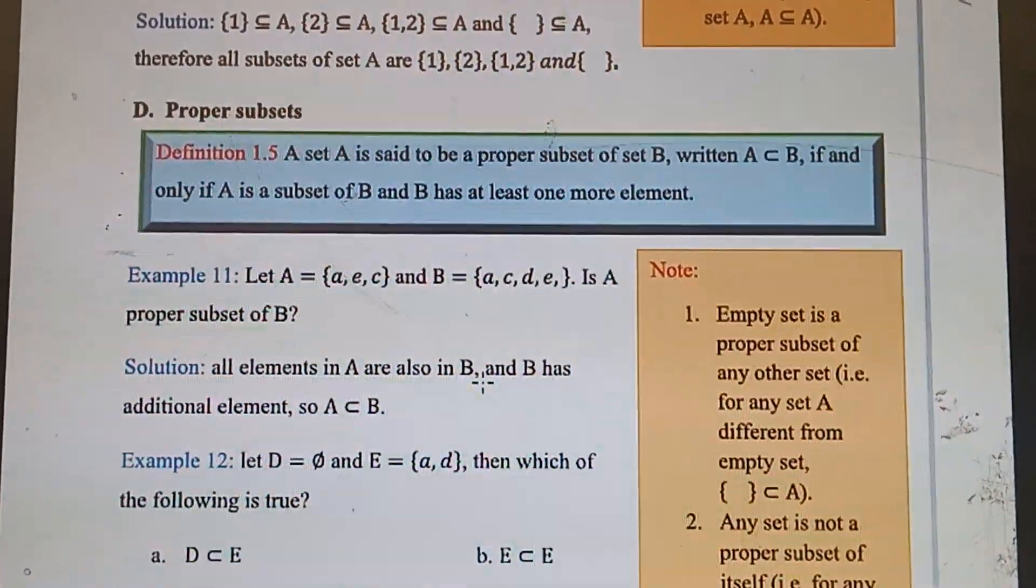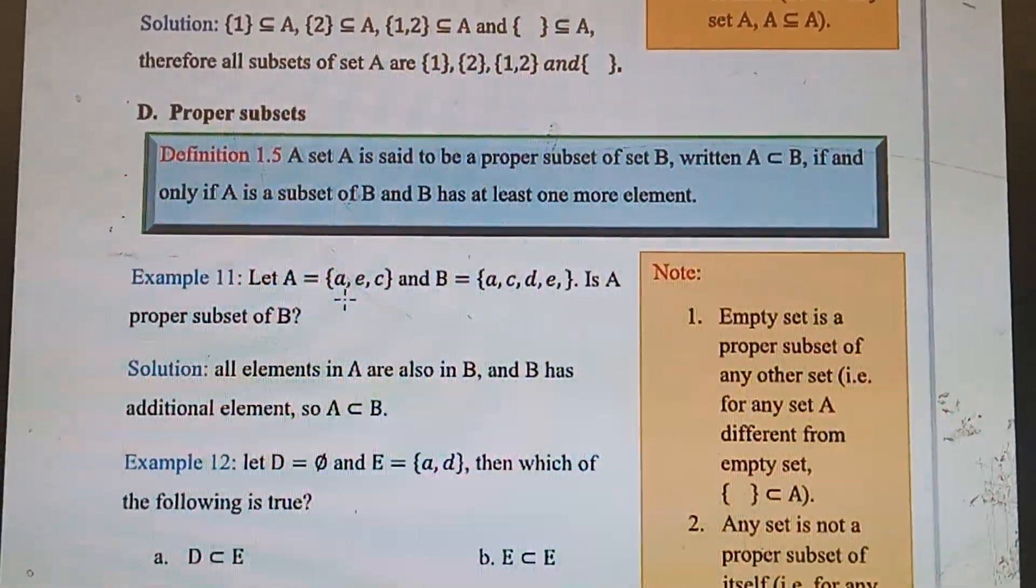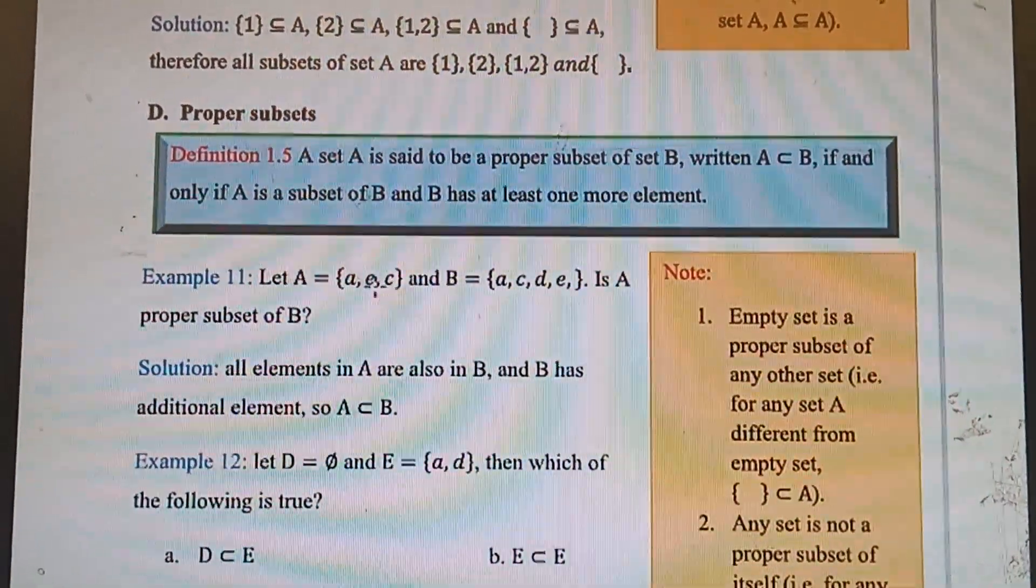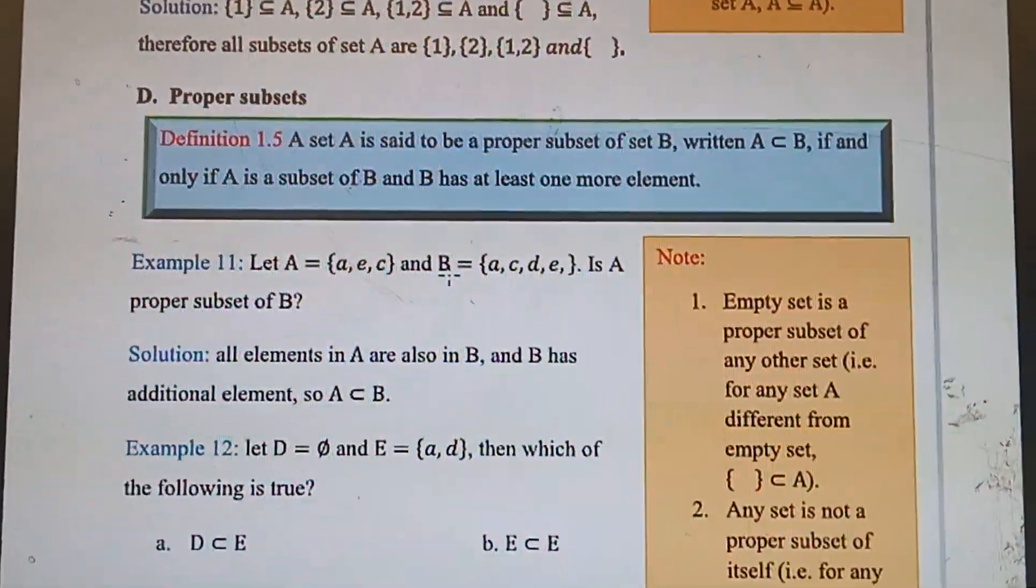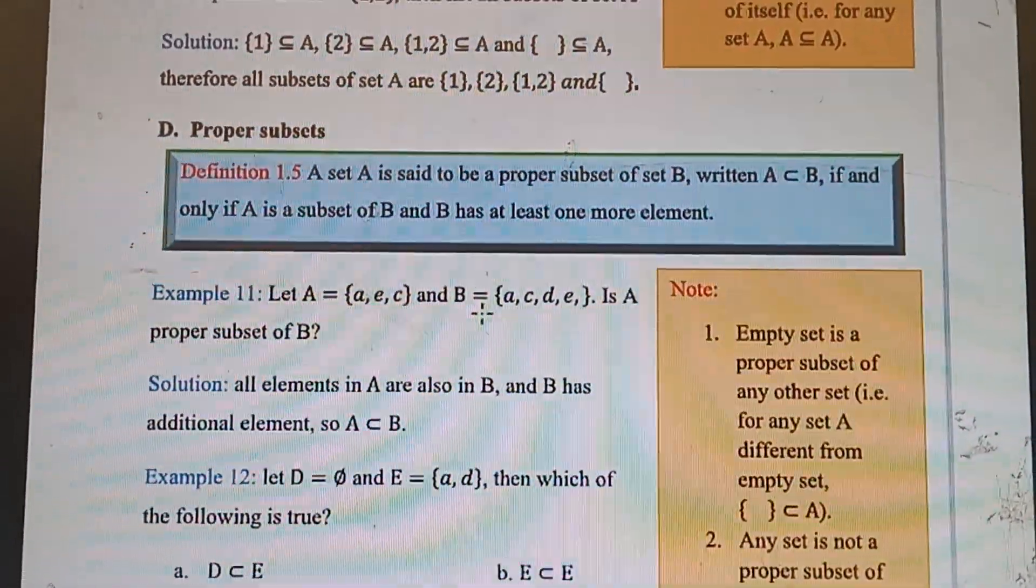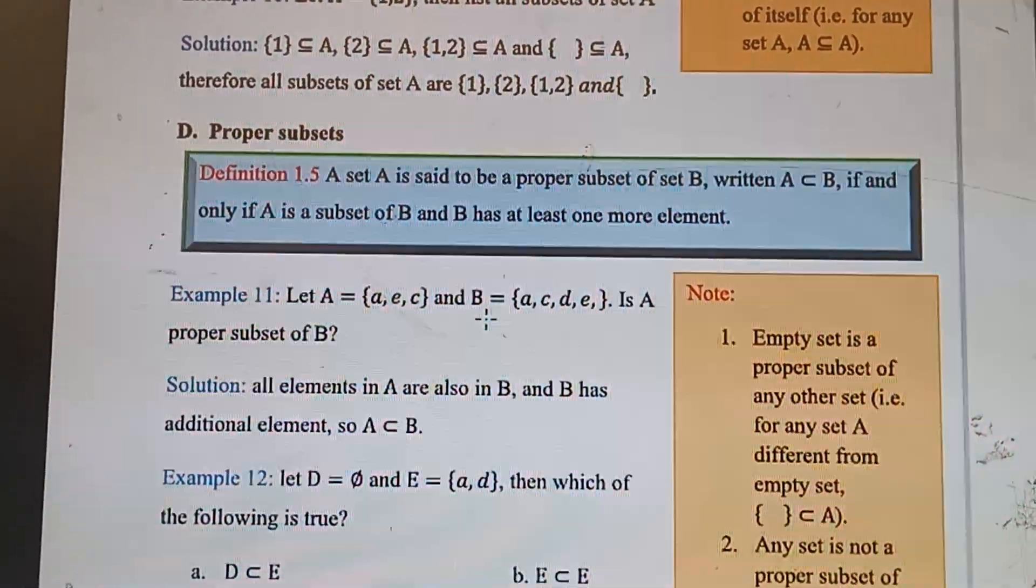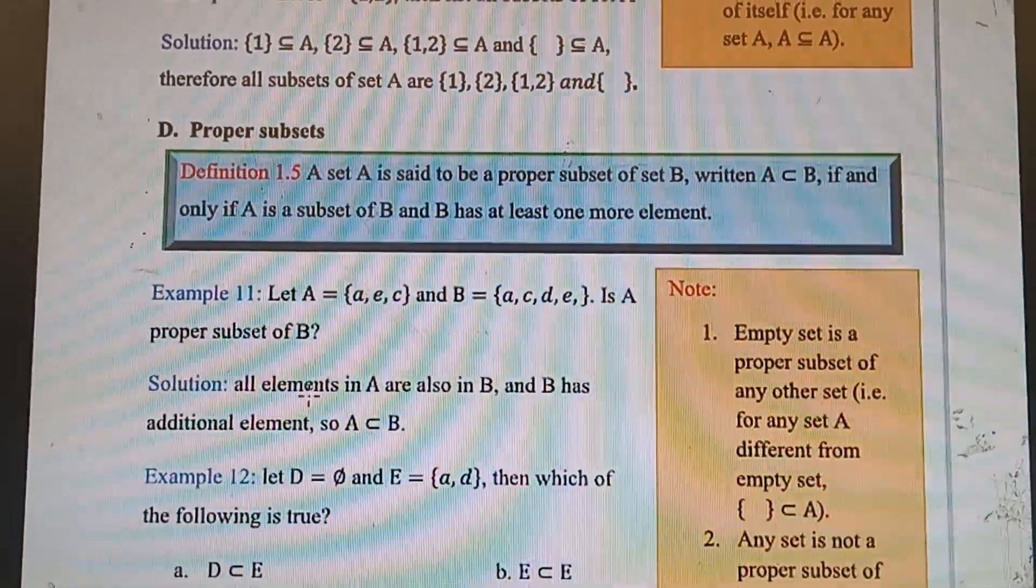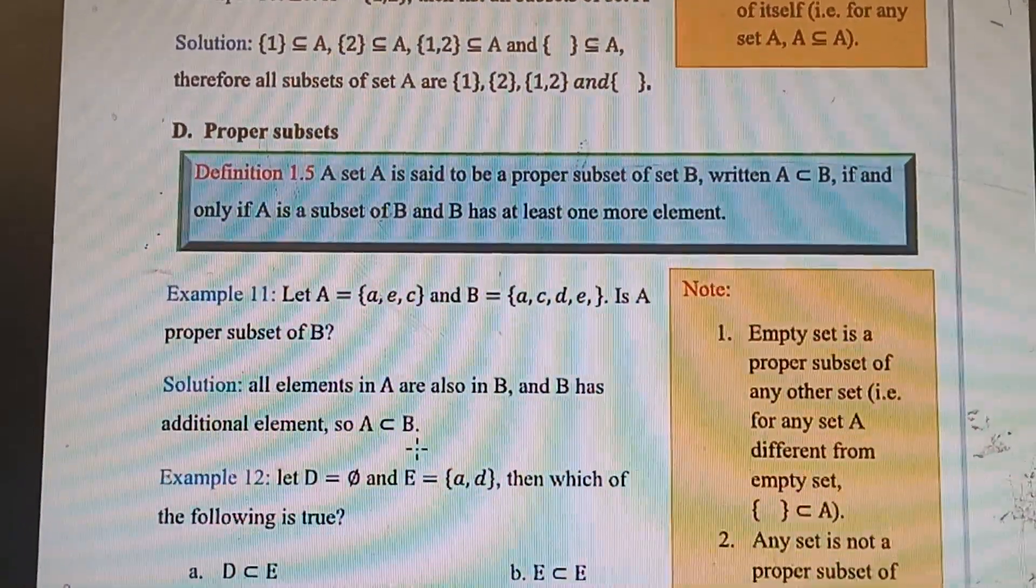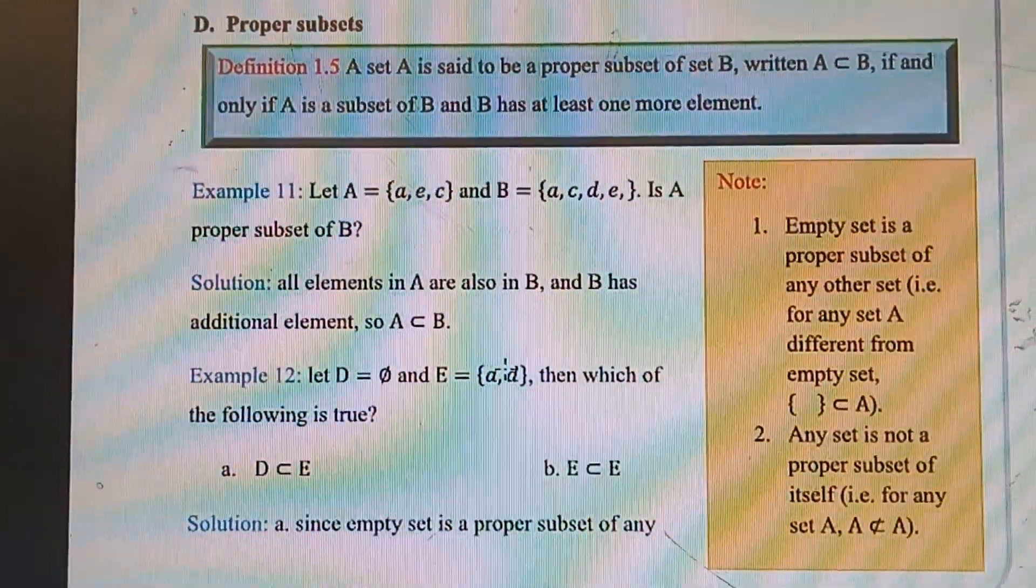So B has additional elements. Let's count the elements. Set A contains a, e, c - how many elements? Three elements. Set B contains four elements. So set B has one more element. Therefore, set A is a proper subset of set B.